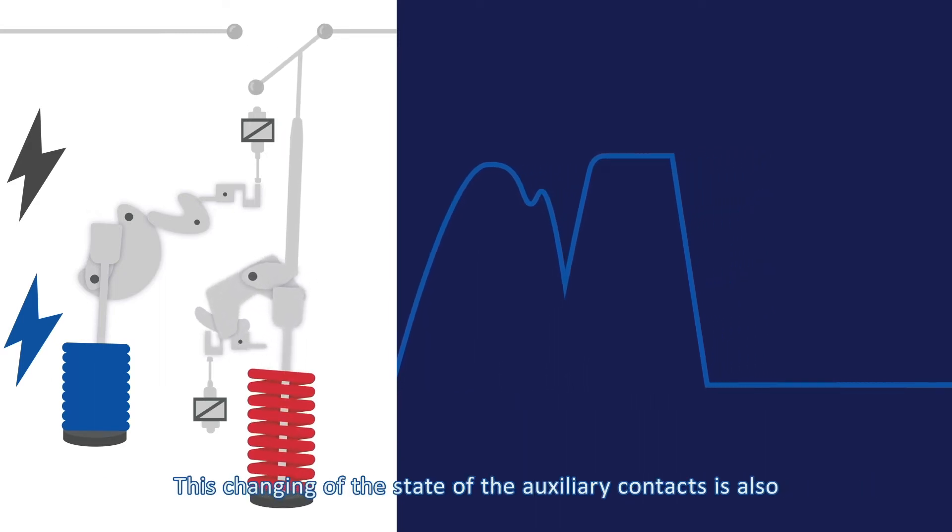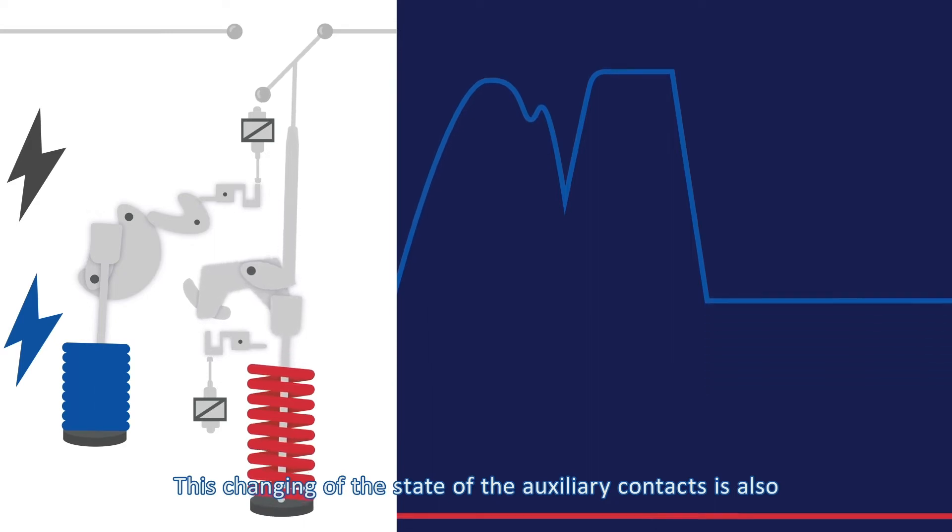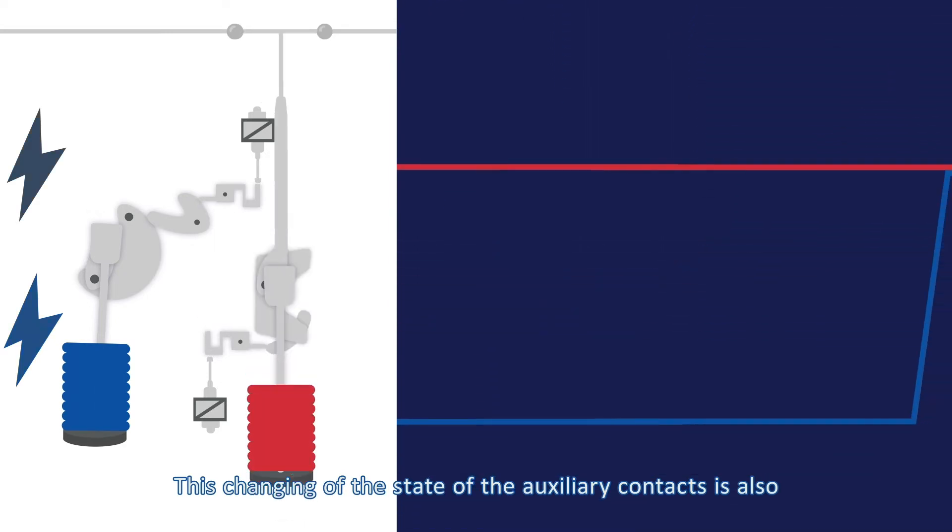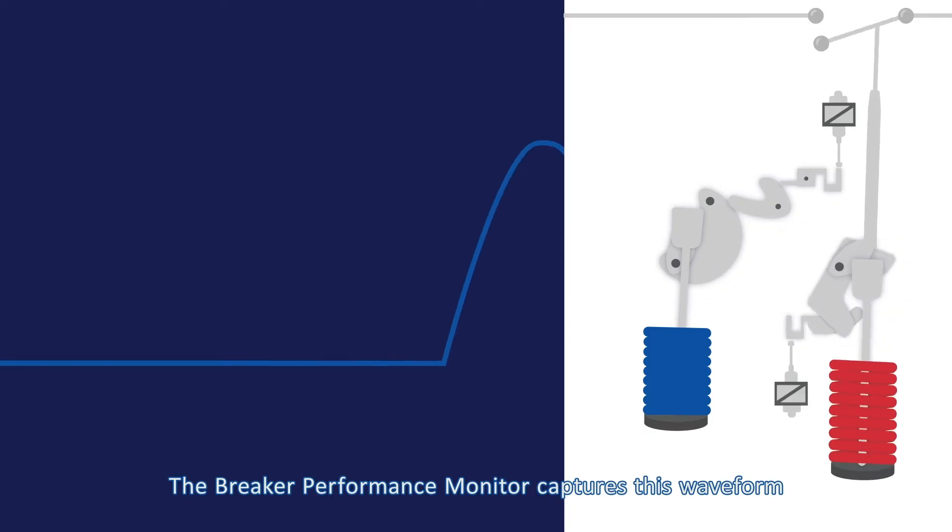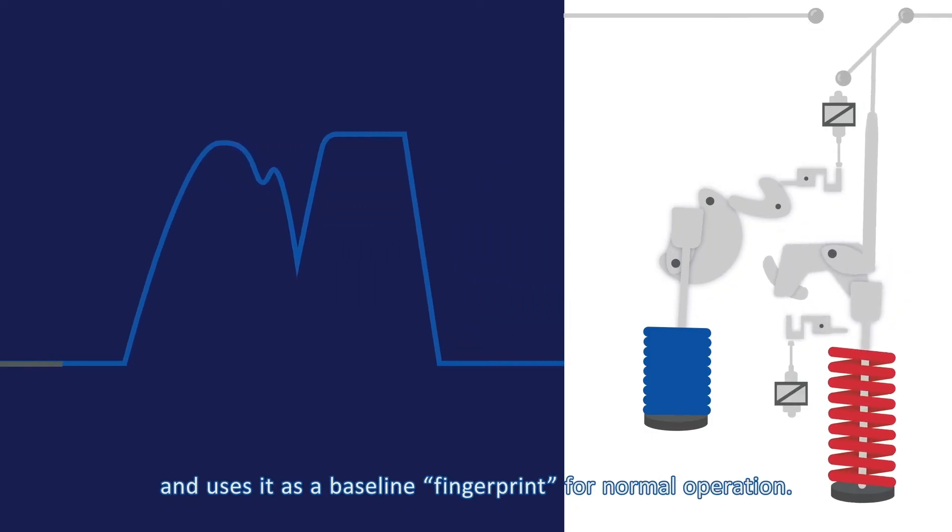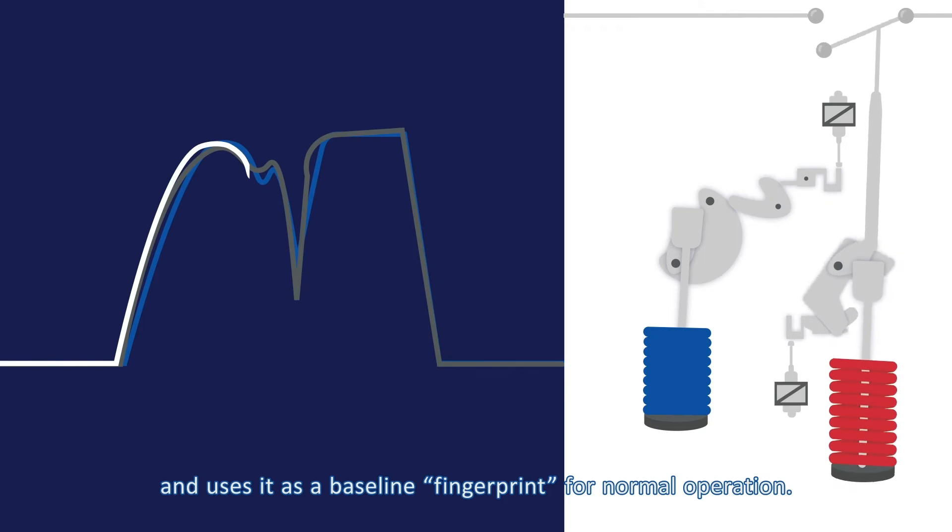This changing of the state of the auxiliary contacts is also captured during the waveform capture, as well as the current flow through the breaker's main contacts. The breaker performance monitor captures this waveform and uses it as a baseline fingerprint for normal operation.